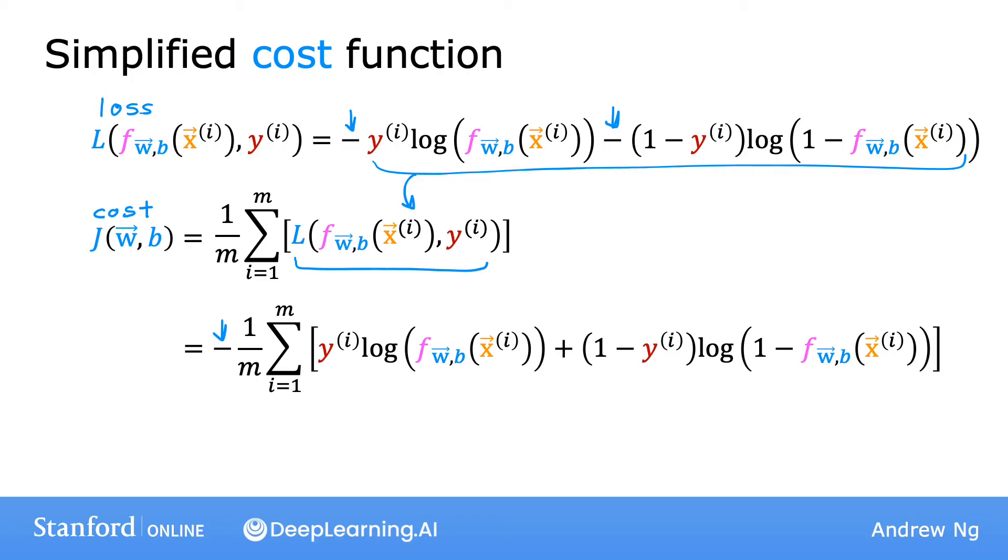Now, you might be wondering, why did we choose this particular function when there could be tons of other cost functions we could have chosen? Although we won't have time to go into great detail on this in this class, I'd just like to mention that this particular cost function is derived from statistics using a statistical principle called maximum likelihood estimation, which is an idea from statistics on how to efficiently find parameters for different models. And this cost function has the nice property that it is convex. But don't worry about learning the details of maximum likelihood. It's just a deeper rationale and justification behind this particular cost function.